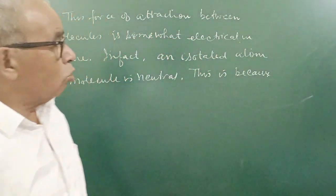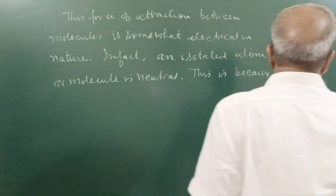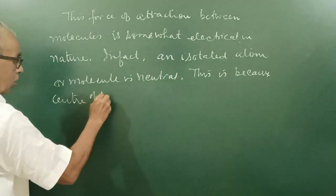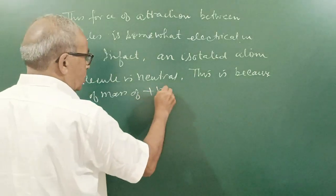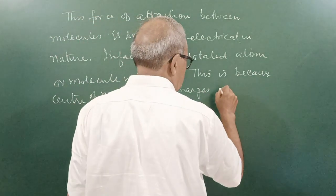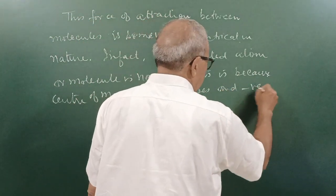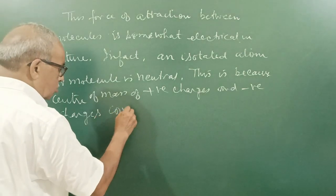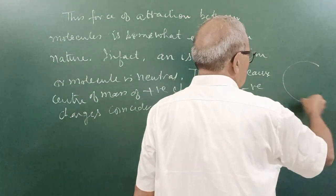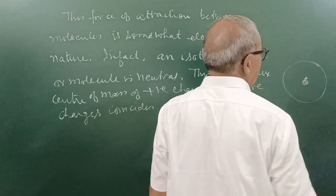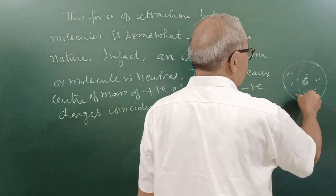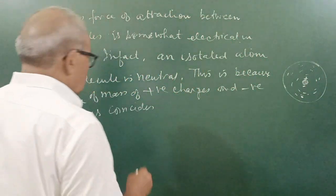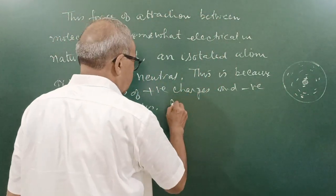Charge of, magnitude of charge of electron is equal to magnitude of proton. So negative and positive charges are present. This is because center of mass of positive charges and center of mass of negative charges coincide. So no net charge there.